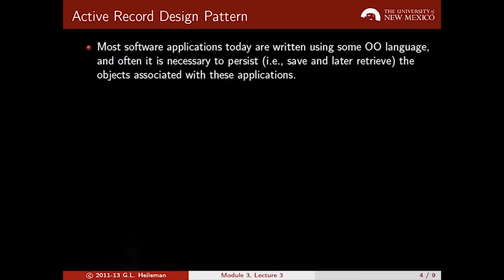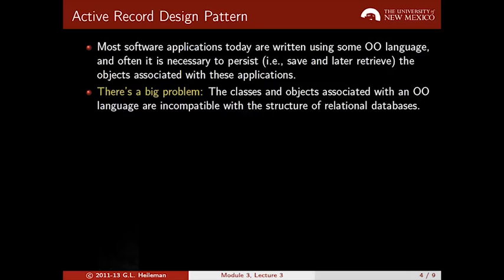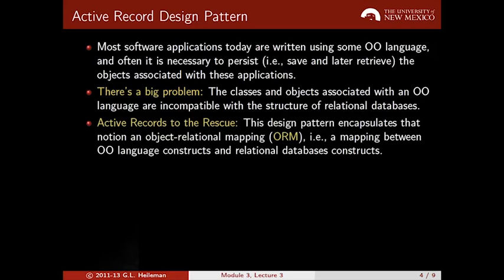The Active Record Design Pattern is a beautiful design pattern that really allows you to link together object-oriented programming and relational databases. Most programming languages today are object-oriented, and this is a big problem because relational databases are not. Active Records solves this by creating what's called an object relational mapping — it maps the constructs in an object-oriented language to those in a relational database.